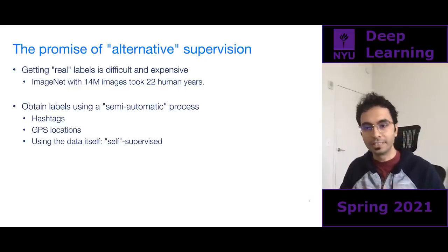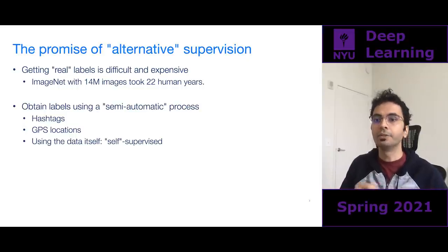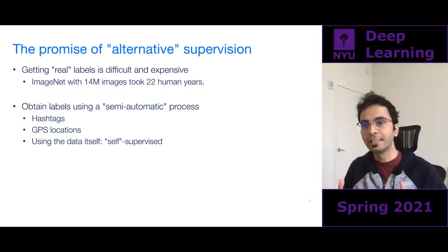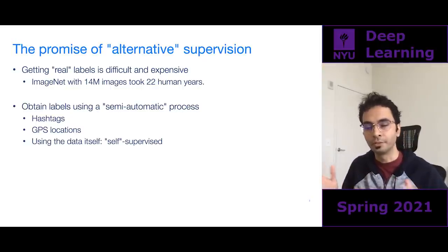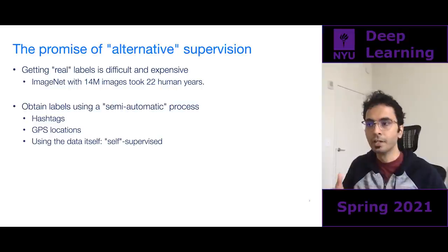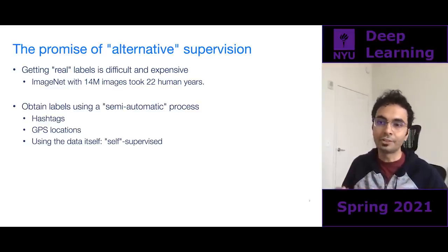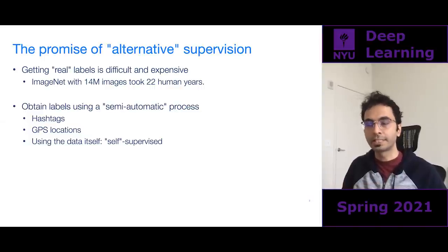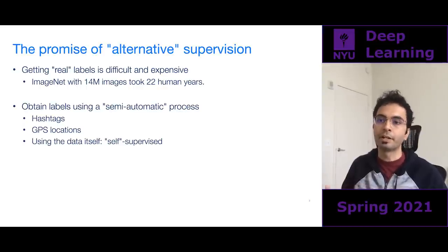Getting real labels is really difficult and expensive. If you take the ImageNet dataset, which is considered one of the largest supervised datasets, it has about 14 million images in total, about 22,000 categories, and to label this dataset it took about 22 human years. And 22,000 concepts is not a whole lot, because there are far more concepts in the visual world. ImageNet is just an image-based dataset — it does not have videos, no temporal concepts, no actions annotated. So the 22,000 concepts really captures a very small portion of the visual concepts we're interested in.